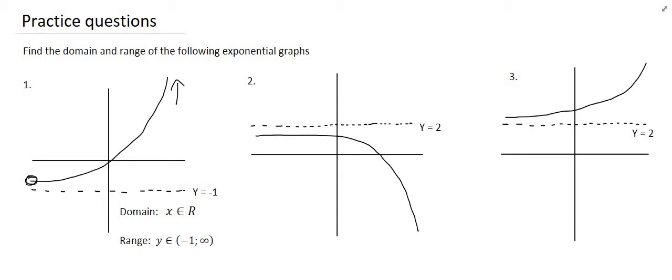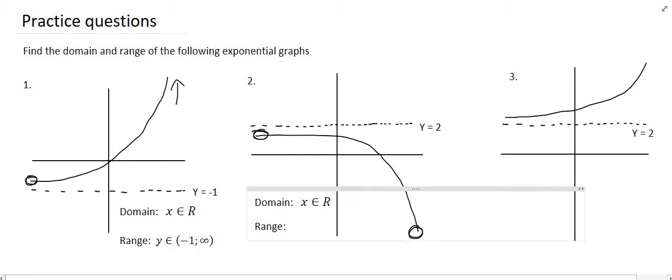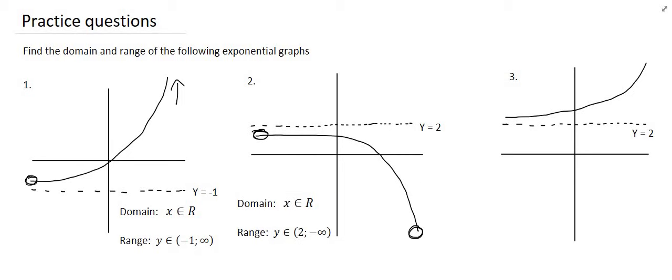Let's try number two, so once again the domain is going to be all real numbers and then if we look at the range, well now it's slightly different. The highest value for this exponential graph is two and the lowest value it goes all the way down to negative infinity, so it's going to go from two to negative infinity. So that will be represented as follows and now we can try the last one.